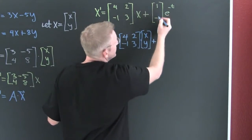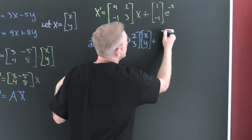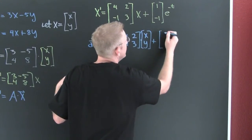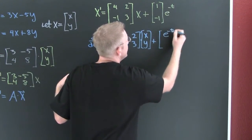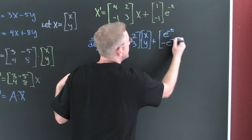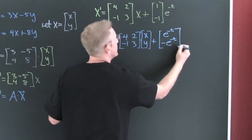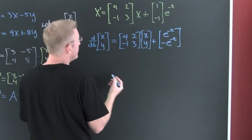Plus those scalars times that function. I can multiply e to the minus t and minus e to the minus t. So then let's perform this multiplication.